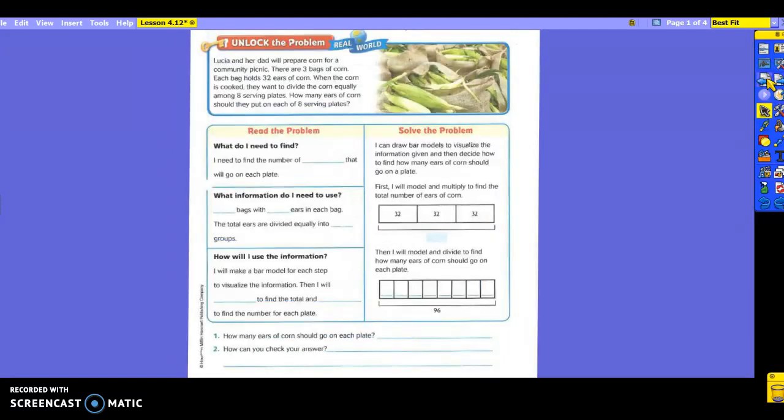So let's read the problem that it's asking of us this morning. Lucia and her dad will prepare corn for the community picnic. There are three bags of corn. Each bag holds 32 ears of corn. When the corn is cooked, they want to divide the corn equally among eight serving plates. How many ears of corn should they put on each of eight serving plates? Get your highlighter out, please.